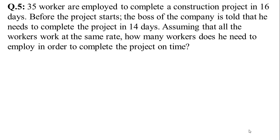Question number 5 to 12. In this exercise, these relations are inversely proportional. Inversely proportional means one quantity is increased, then the other quantity is decreased. In question number 5, 35 workers are employed to complete a construction project in 16 days. Before the project starts, the boss of the company is told that they need to complete the project in 14 days. Assume that all workers work at the same rate. How many workers does he need to employ in order to complete the project on time?